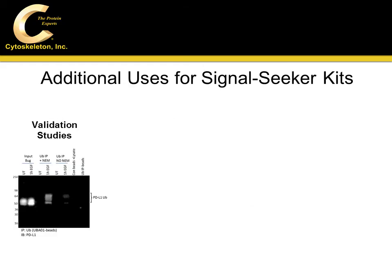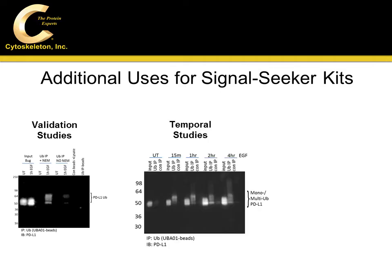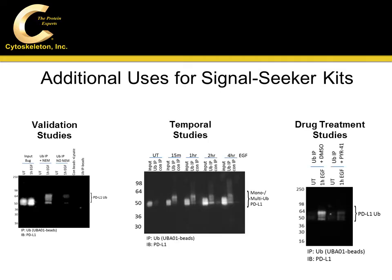Because the SignalSeeker kit provides robust results on endogenous PTM changes, it allows the user to perform additional validation studies, time course studies, and drug treatment studies to measure physiologic changes in PD-L1 mono- and poly-ubiquitination.